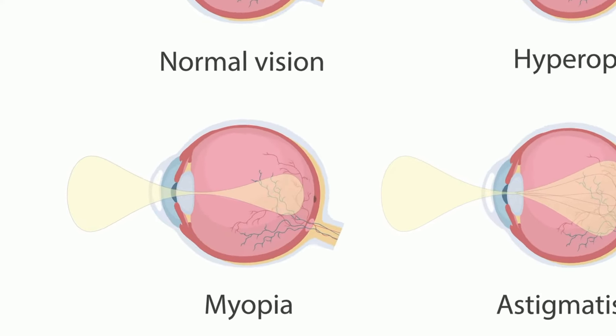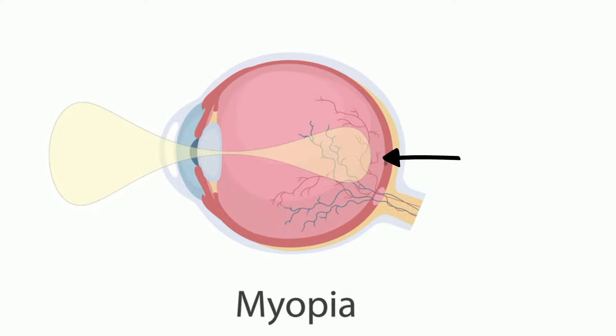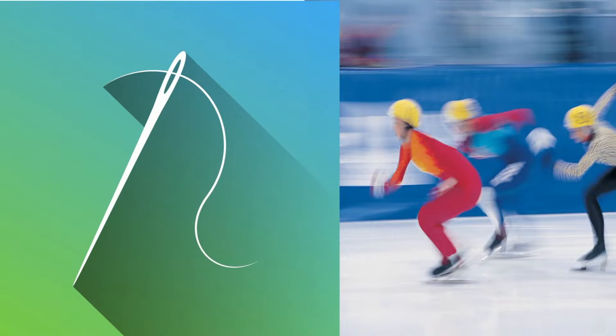Nearsightedness, or myopia, means people can see objects close but objects far away are blurry because the light is focused in front of the retina.